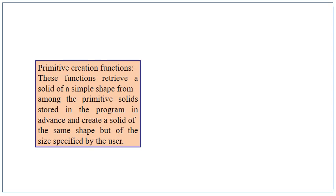Primitive creation functions retrieve a solid of a simple shape from among the primitive solids stored in the program in advance, and create a solid of the same shape but with a size specified by the user. This type of representation uses basic shapes with operations like extrude, revolve, loft, and sweep to form solid objects.